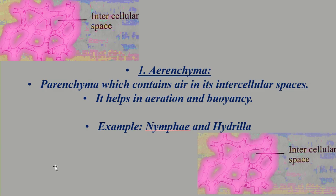Aerenchyma refers to parenchyma cells that contain air in their intercellular spaces, and these cells help in aeration and buoyancy. Buoyancy is the property that helps plants float over water bodies. Plants like Nymphaea (lotus), lily, and Eichhornia (water hyacinth) float over water bodies due to the support of aerenchyma. In the picture you can find the aerenchyma structure with its intercellular spaces.